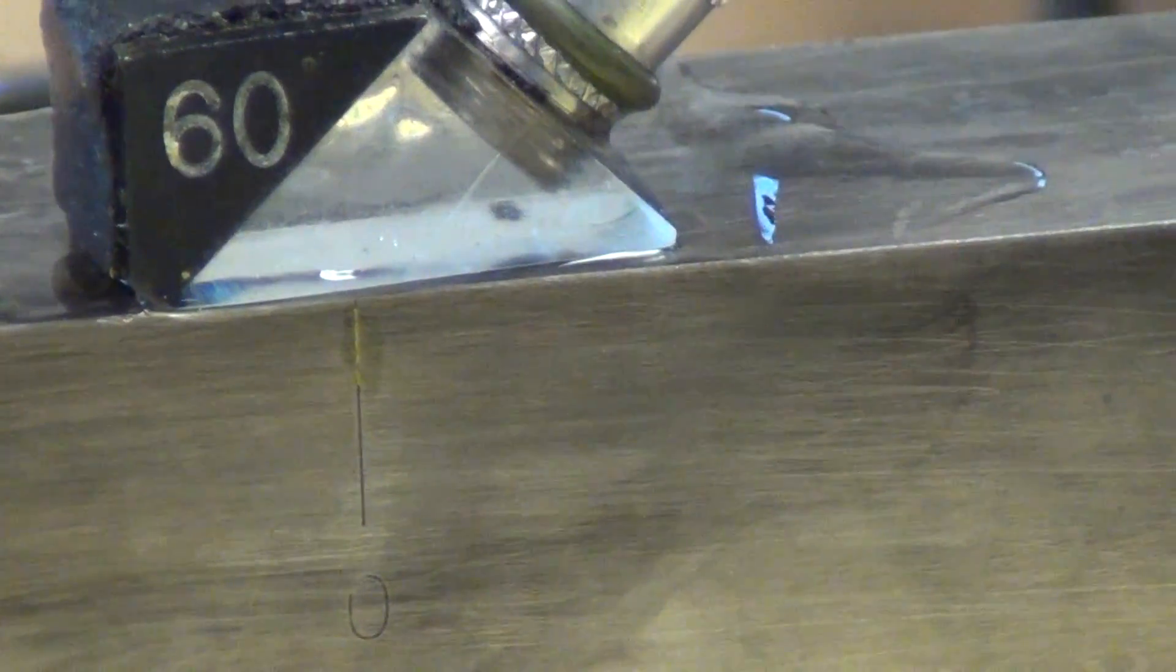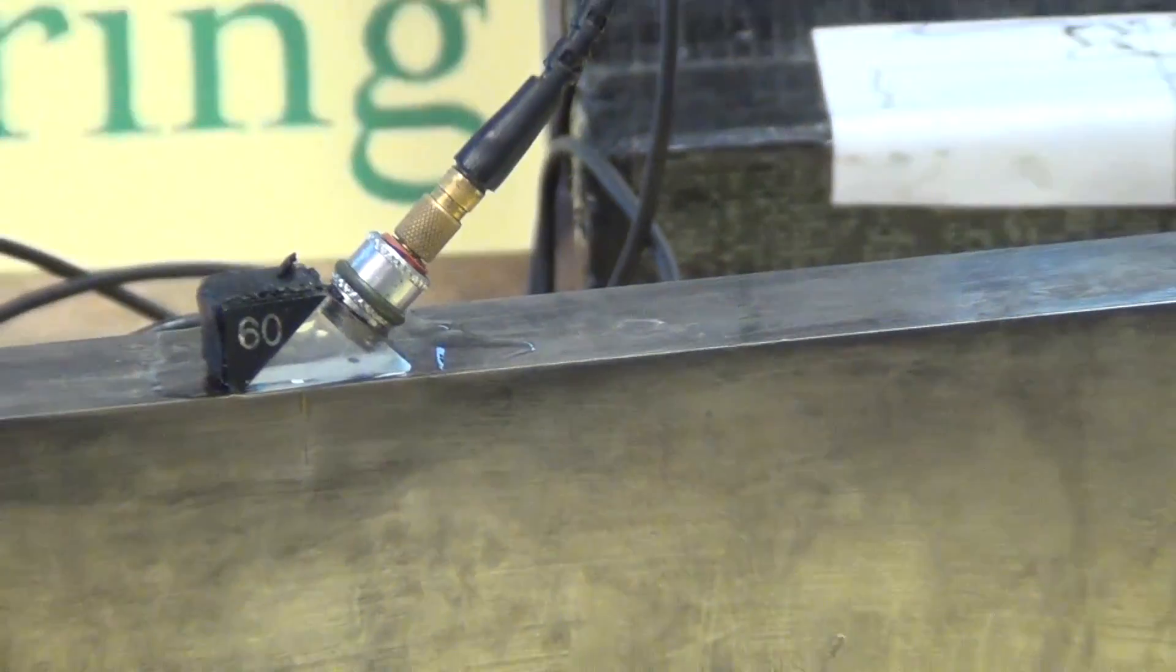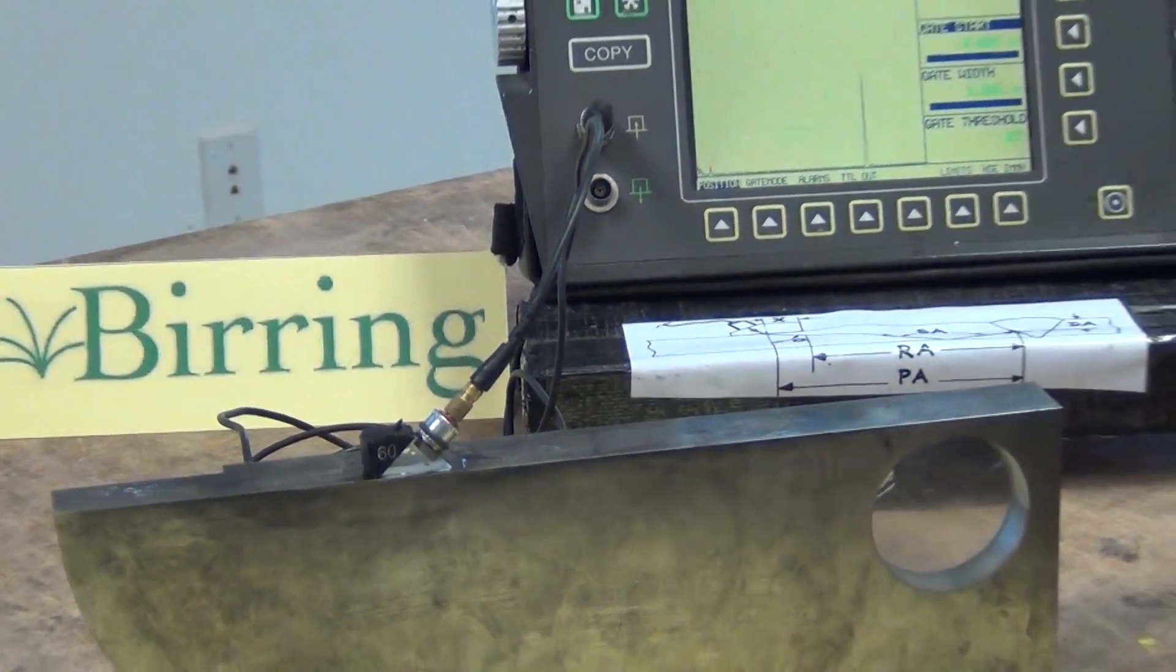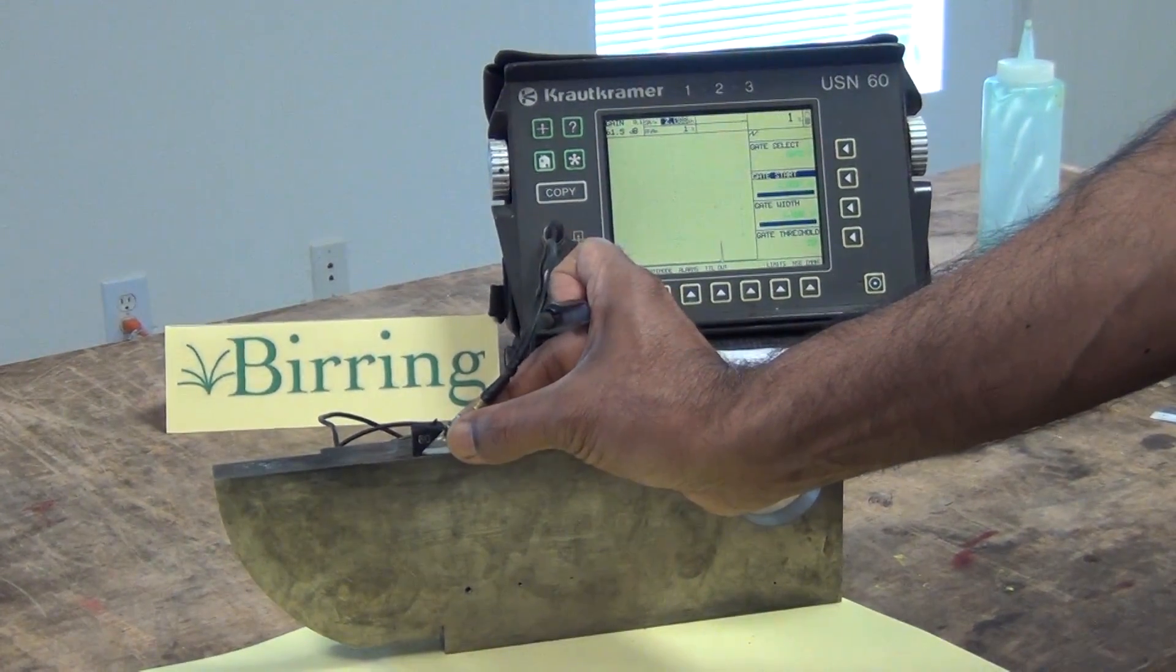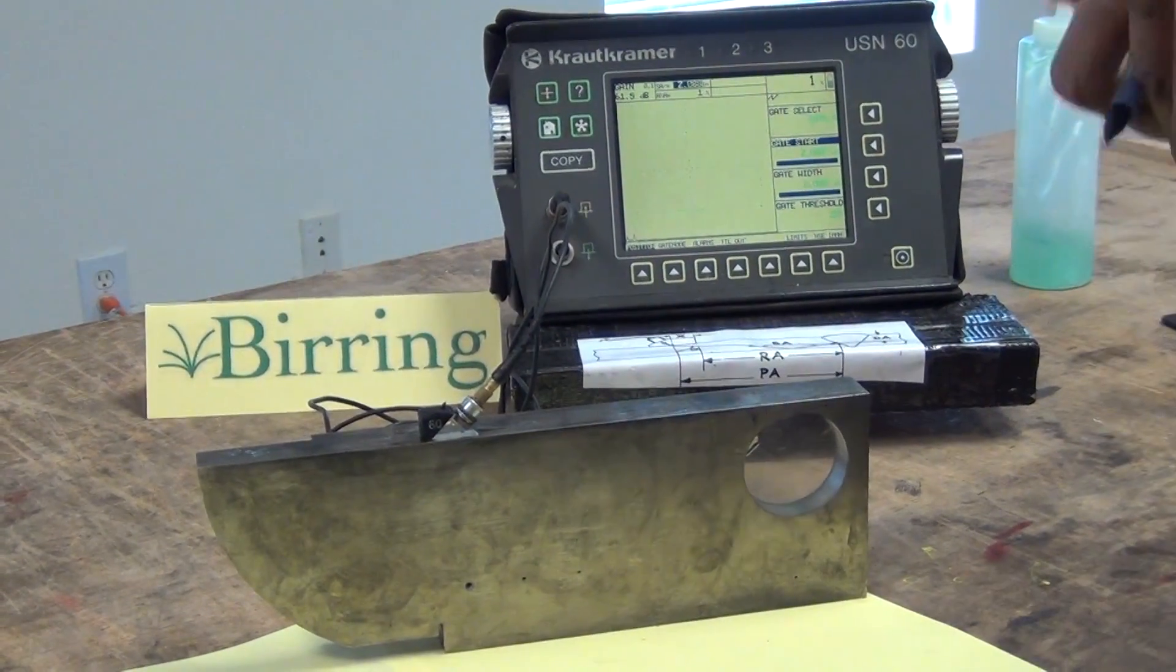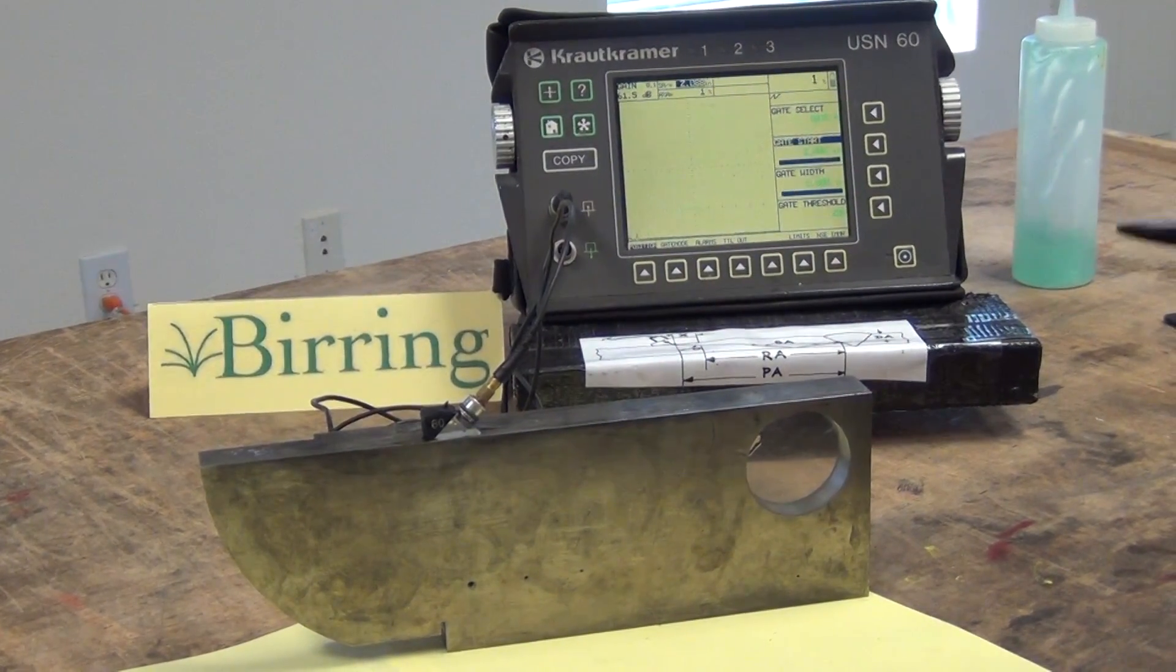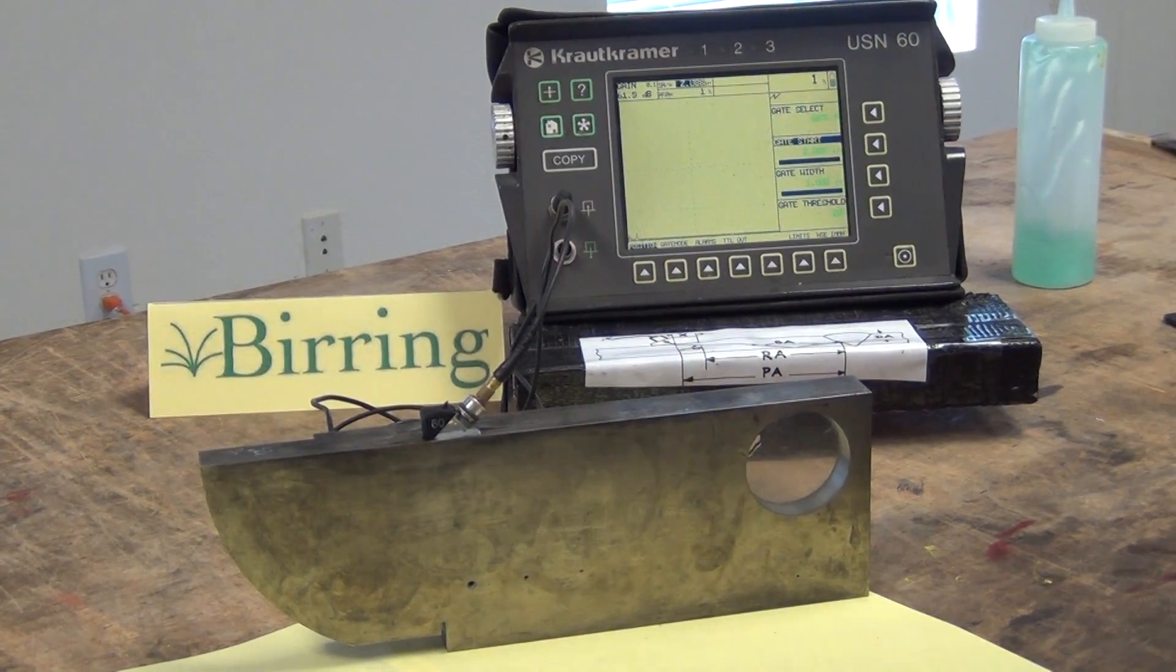Once that is done, then we use that exit point to find the actual refracted angle of the wedge. As you can see the refracted angle says 60 degrees. But the actual refracted angle could be 61, 59. So we need to know the exact refracted angle.